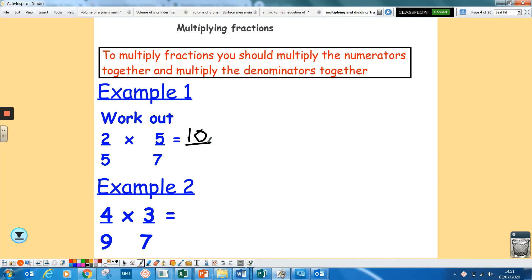Multiply the top to get 10, multiply the bottom 5 times 7 to get 35. This next one, again multiply the top, the numerator, multiply the denominator to get 63. Again, it can be simplified. You can work on simplifying it if it can. If it can't, you just leave it like that.